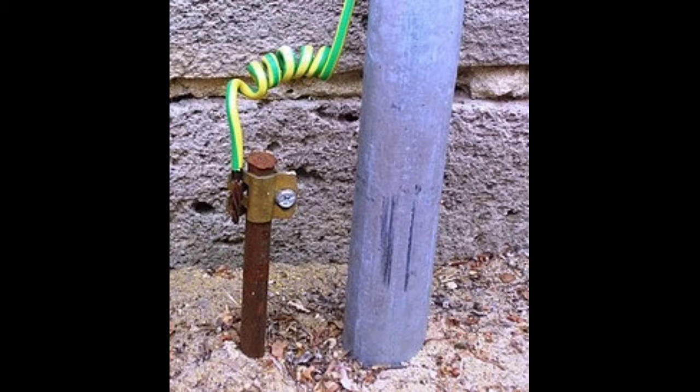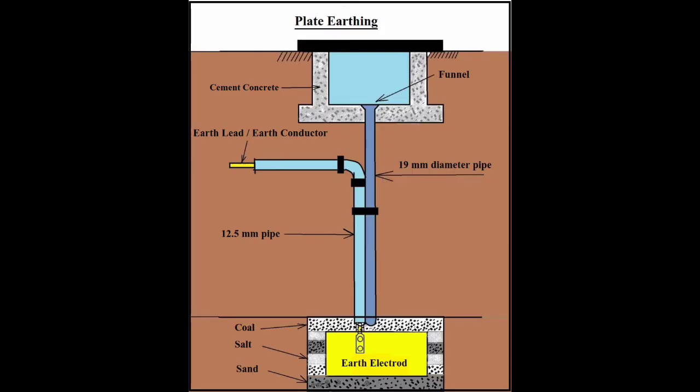How do you see the earth in the rod? This is a simple rod. The earth rod has a certain thickness. The basic method is about the pipe and plate.